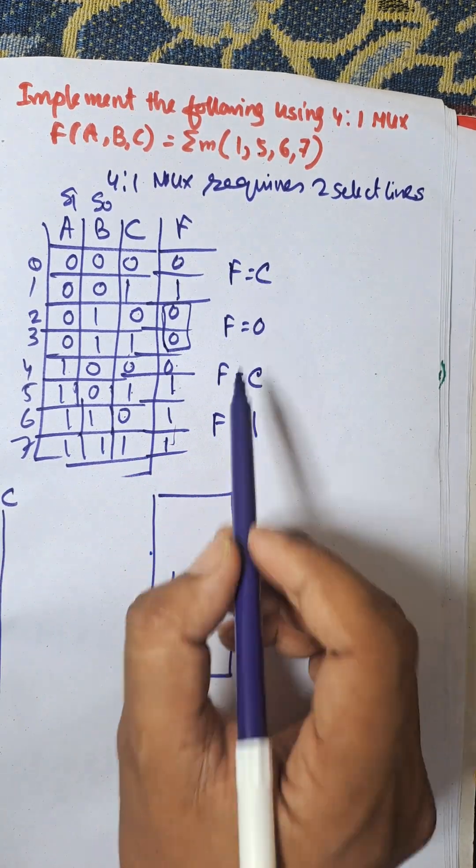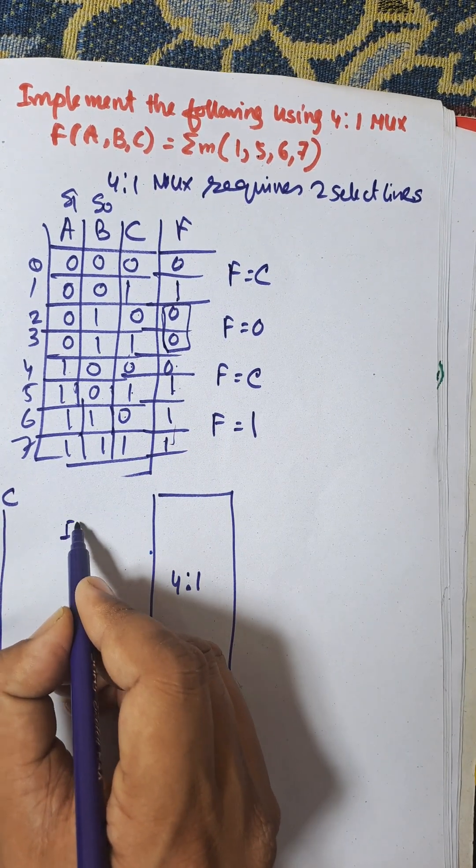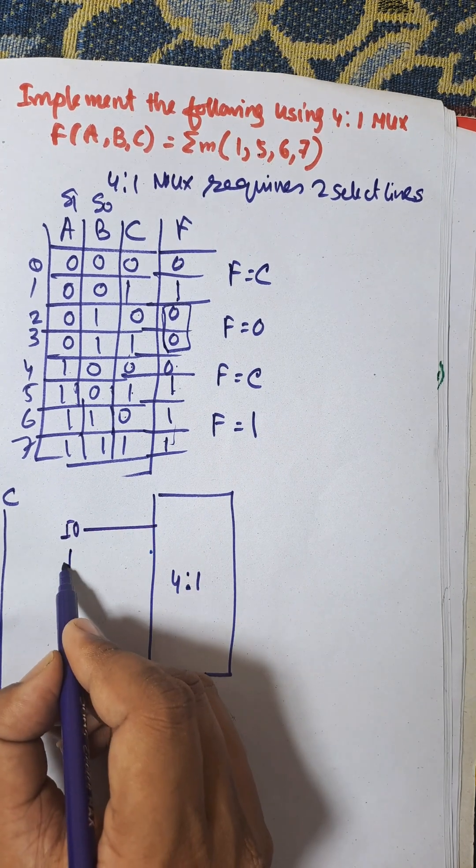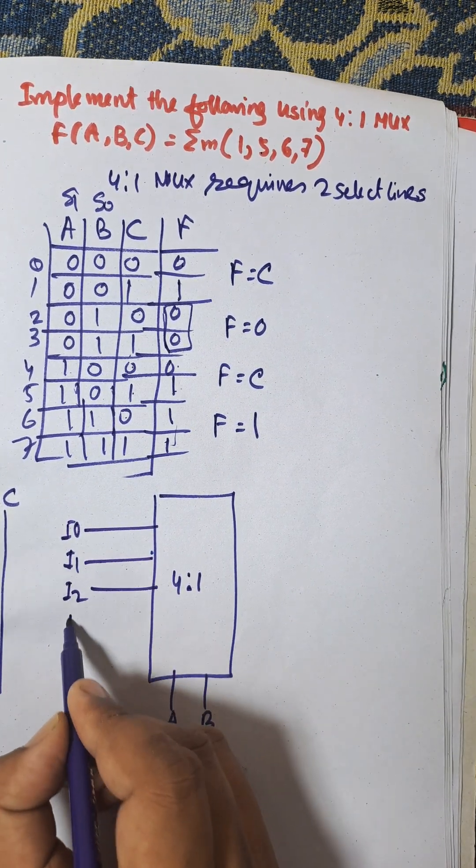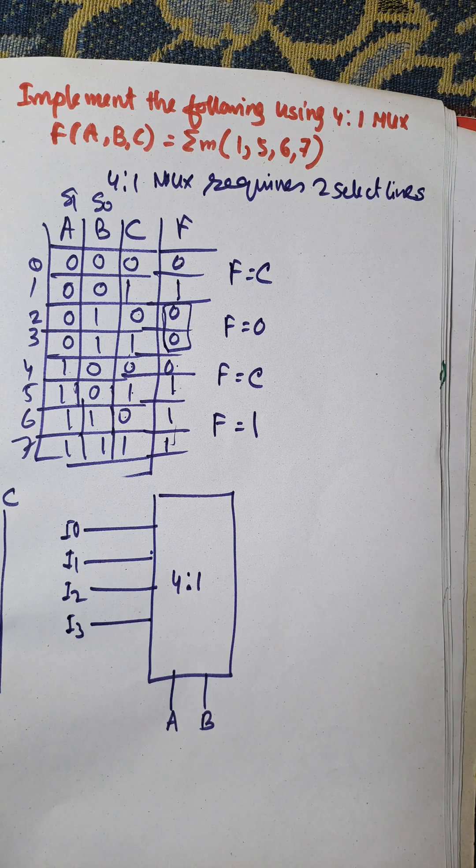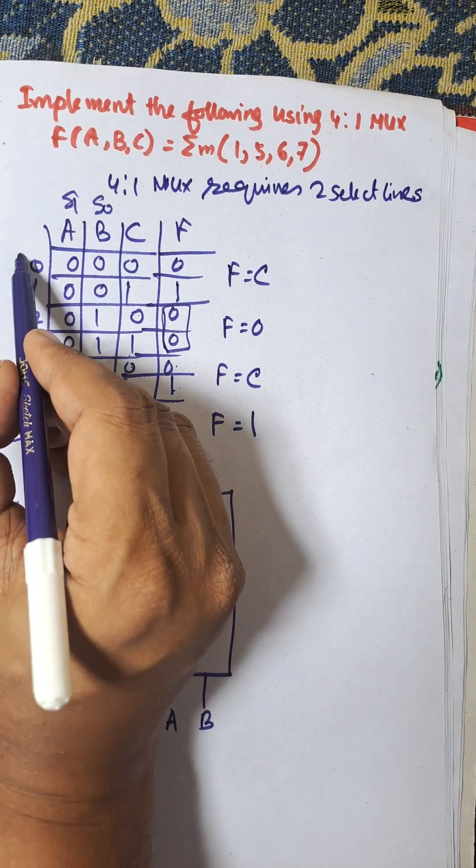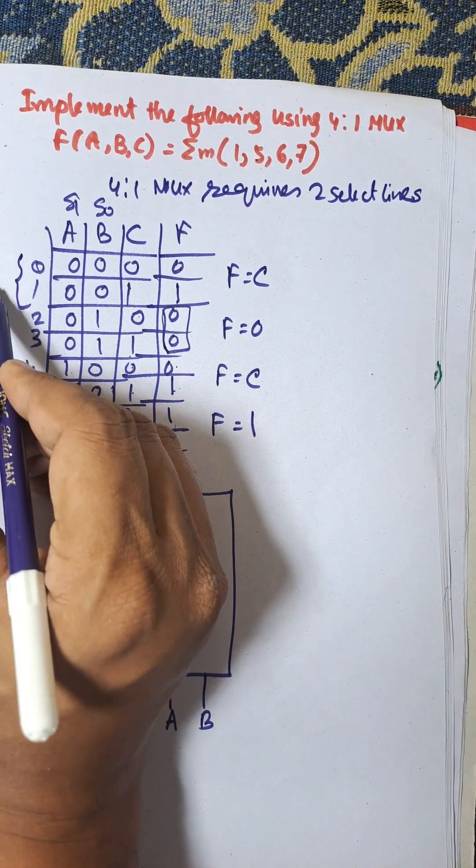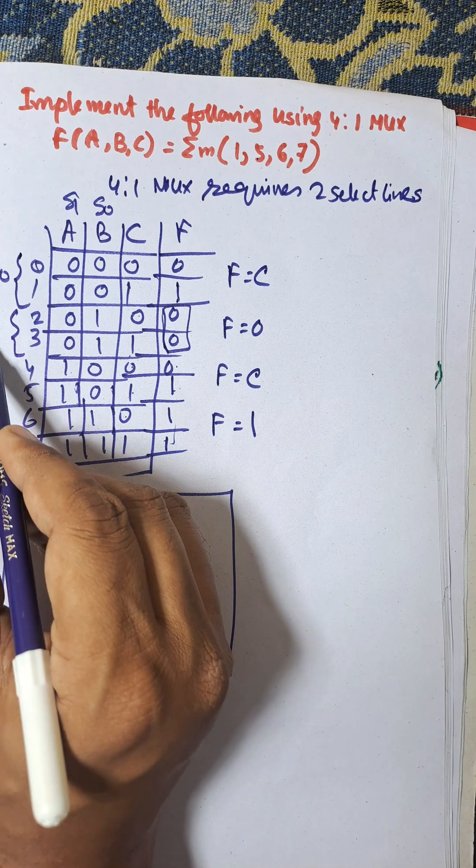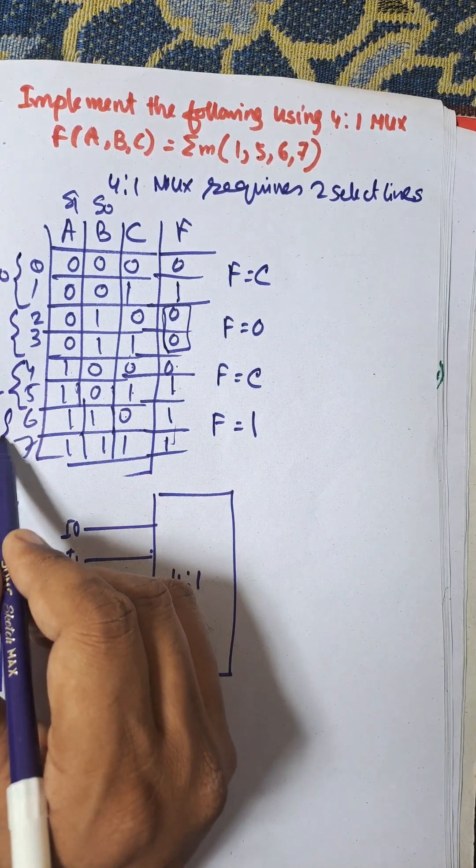And this is I0, I1, I2, and I3. And there are four inputs here. This is for I0, this is for I1, and this is for I2, this is for I3.